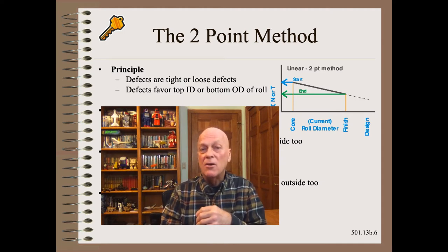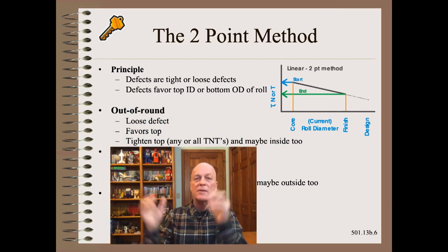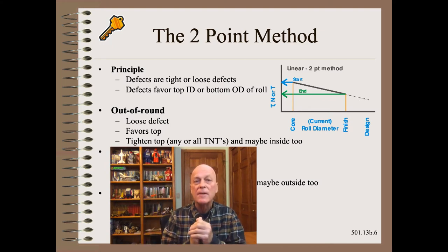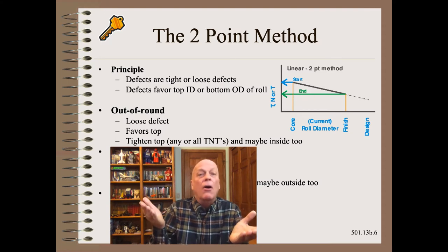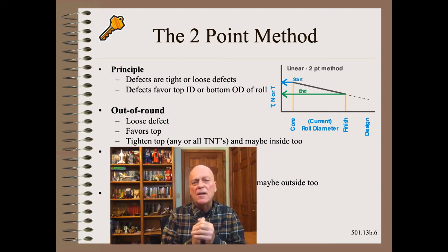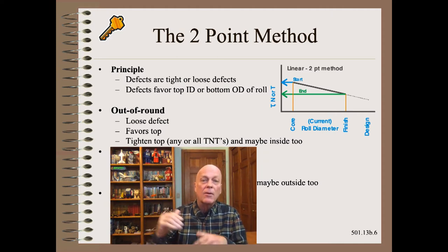Using what we have learned so far, let us now practice on out-of-round rolls. That is a loose defect that favors the outside. Then clearly we would begin by tightening any or probably all of the TNTs at the top of the roll, but may or may not do anything with the bottom of the roll.